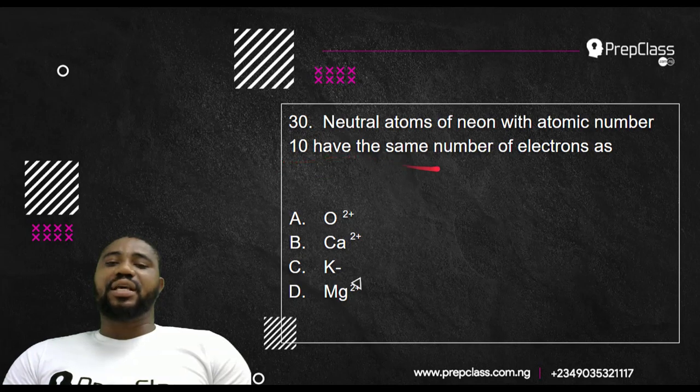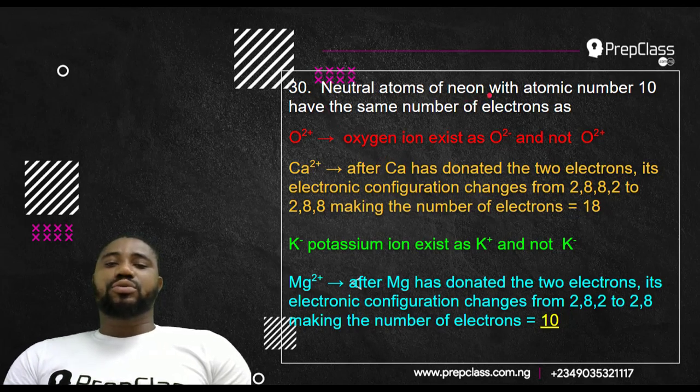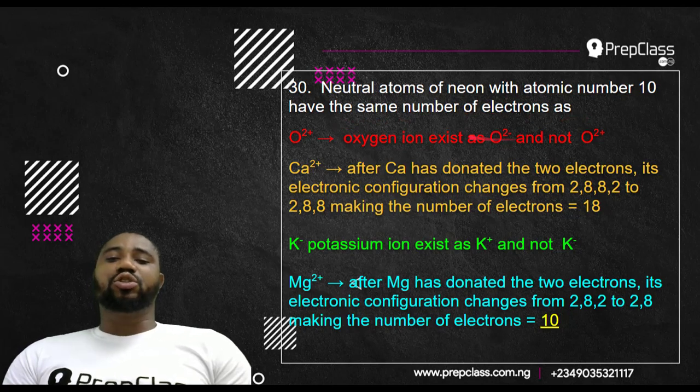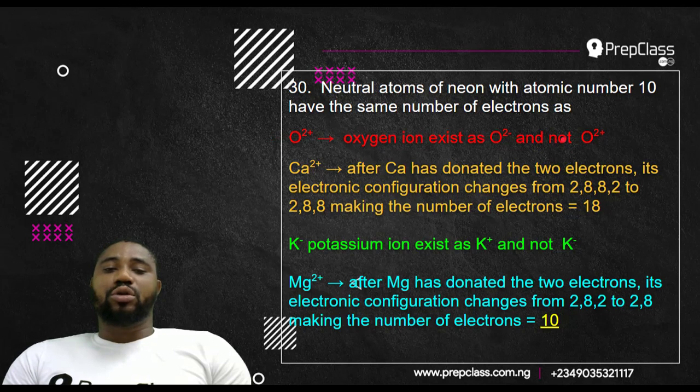Question number 30. Neutral atoms of neon with an atomic number 10 have the same number of electrons as. Option A, O2+. Oxygen ion exists as O2- and not O2+. So this option is kicked out. There is nothing like O2+. Oxygen is O2-. Oxygen is a non-metal.